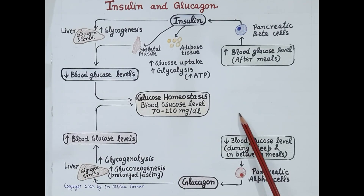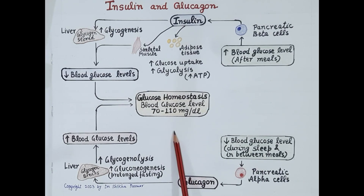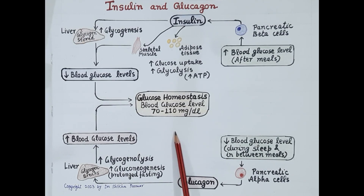Hello students. In today's video we are going to study how insulin and glucagon control blood glucose levels. Blood glucose levels are maintained within the range of 70 to 110 milligram glucose per deciliter of blood, known as glucose homeostasis.